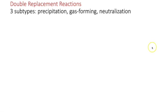In double replacement reactions, there are three subtypes. We've already seen precipitation, when there's a color change because a solid and insoluble product formed. There's also gas forming and neutralization, so let's look at each of these.